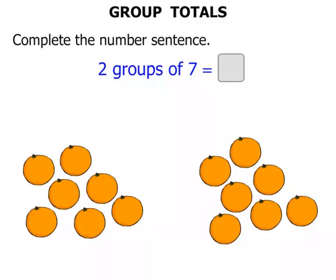Now what does it all equal? What does it all add up to? Well let's start counting. One, two, three, four, five, six, seven, eight, nine, ten, eleven, twelve, thirteen, fourteen. So two groups of seven equals fourteen.